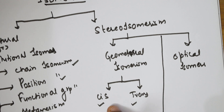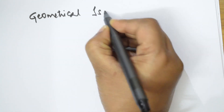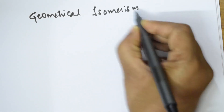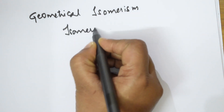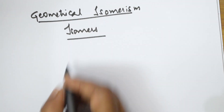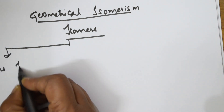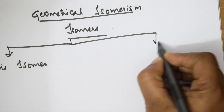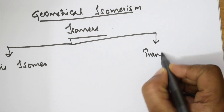Now let us pick up the geometrical isomerism concept and take certain examples. Geometrical isomers are divided into cis and trans. Cis means same side. Trans means opposite side. Remember that.